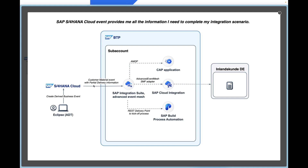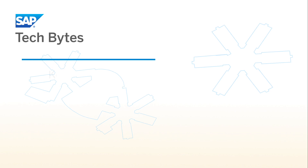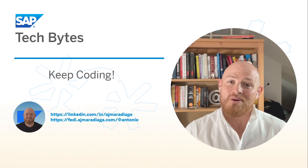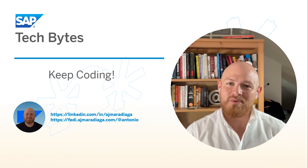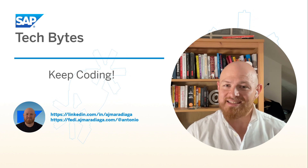Nico will show you a bit later how a CAP application can communicate with Advanced Event Mesh. And last but not least, we can also use an event to trigger a process in SAP Build Process Automation, simply by creating what's called a REST Delivery Point. That process will have all the information that it needs in order to complete — no need to go back to SAP S/4HANA Cloud. We've seen how, by creating the right business events, we can easily extend an out-of-the-box event that provides all the information needed to complete an integration scenario. I hope you find these SAP Tech Bytes useful. Ciao!